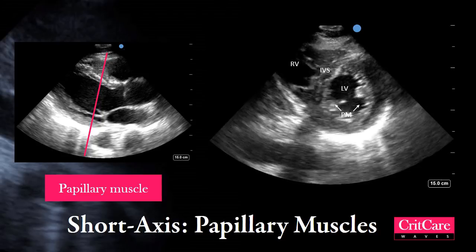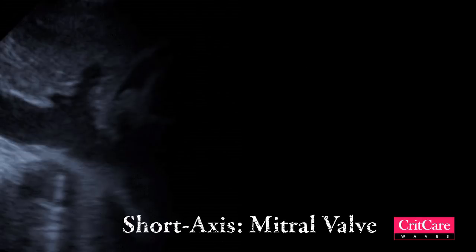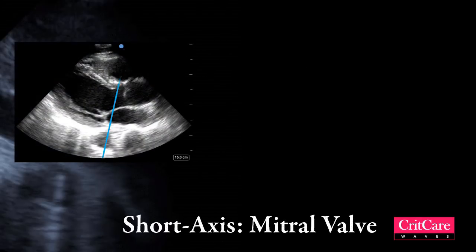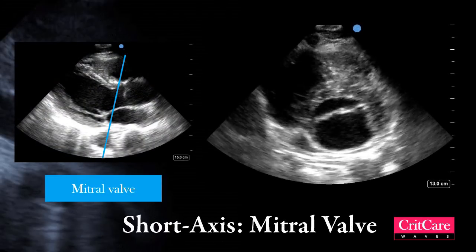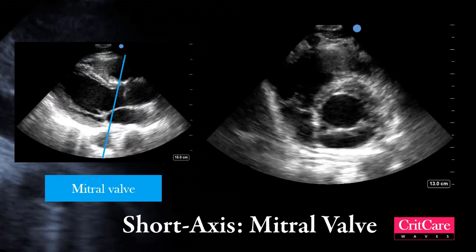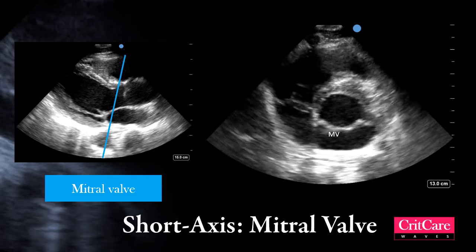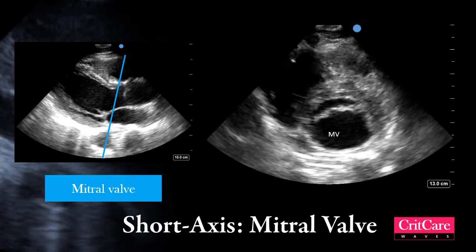The next view is at the level of the mitral valve. The fish mouth appearance of the mitral valve within the left ventricle can be seen, and the right ventricle is to the side.